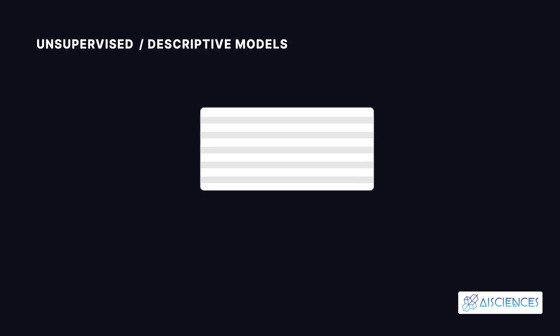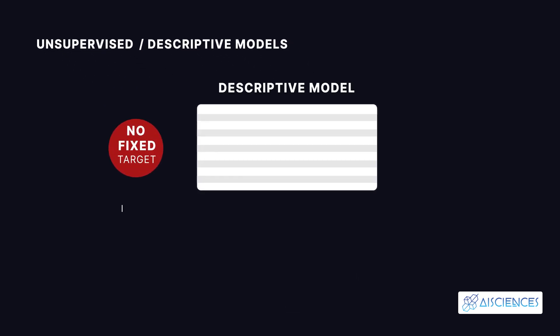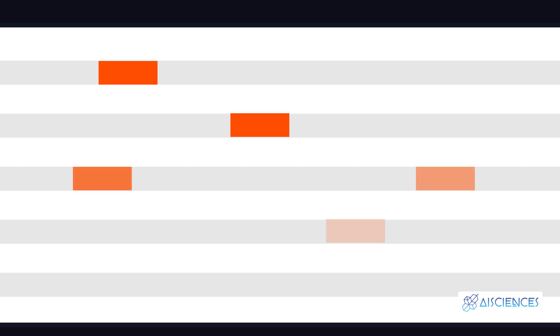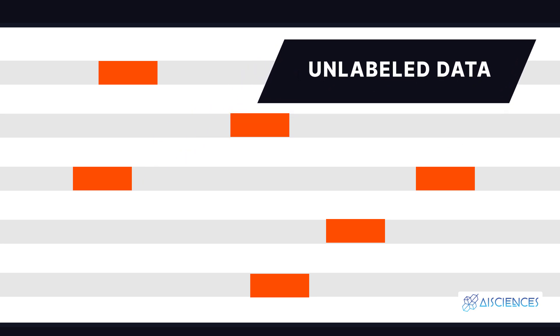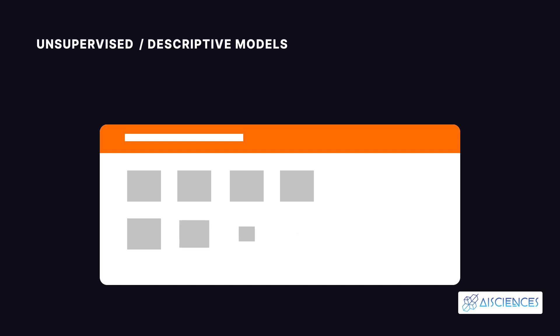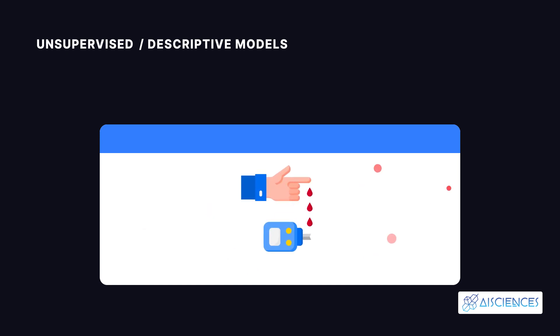Unsupervised Learning — Descriptive Models. Unsupervised learning is used to train a descriptive model in which no fixed target is set, and no specific feature is more important than others. You don't need to supervise the model; it works on its own and discovers information and patterns that were previously undetected. Unsupervised learning deals mainly with unlabeled data. A typical use case is where a retailer wants to find out the combination of products that online shoppers tend to buy more frequently. In the pharmaceutical industry, this technique is used to predict diseases most likely to occur alongside diabetes.